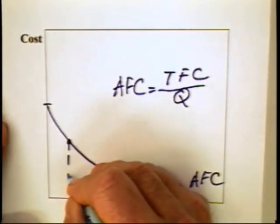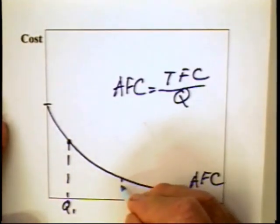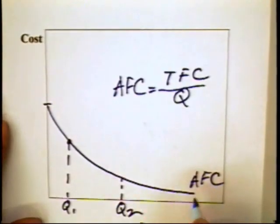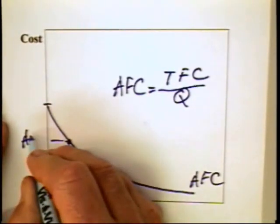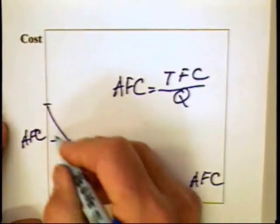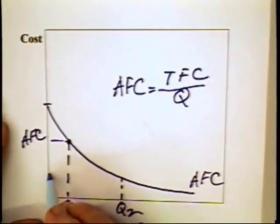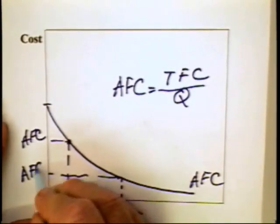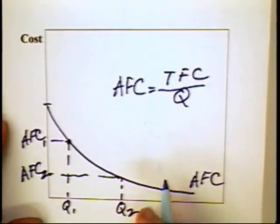This is the average fixed cost at an output level of Q1, and this is the average fixed cost at an output level of Q2. We know that the average fixed cost times quantity Q1 is equal to the average fixed cost times quantity Q2.